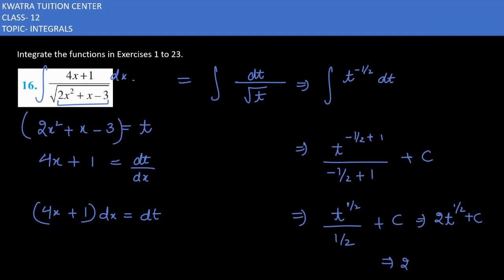Now you can put the value of t, which is 2x² plus x minus 3. So it is 2 times (2x² plus x minus 3)^(1/2) plus a constant.